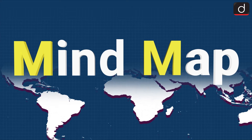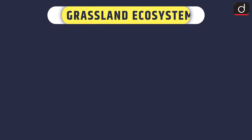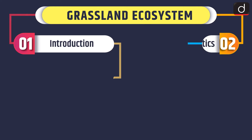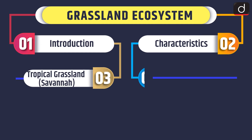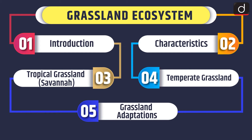Hello everyone, welcome to another episode of Mind Map. Today's topic of discussion is Grassland Ecosystem. First of all, we will discuss the introduction of the topic, then its characteristics, then tropical grassland that is savannah, temperate grassland, and lastly grassland adaptations.